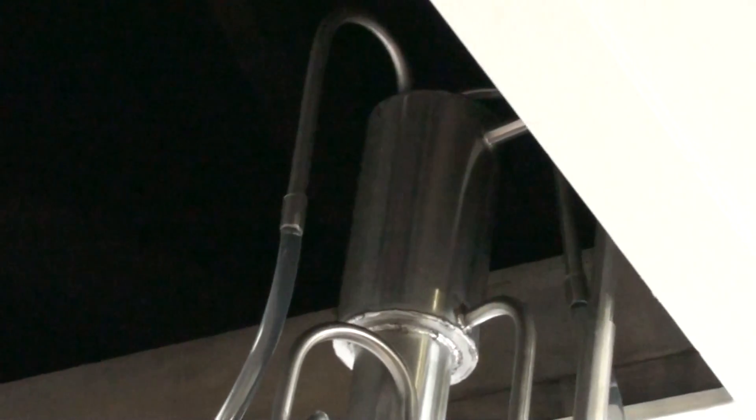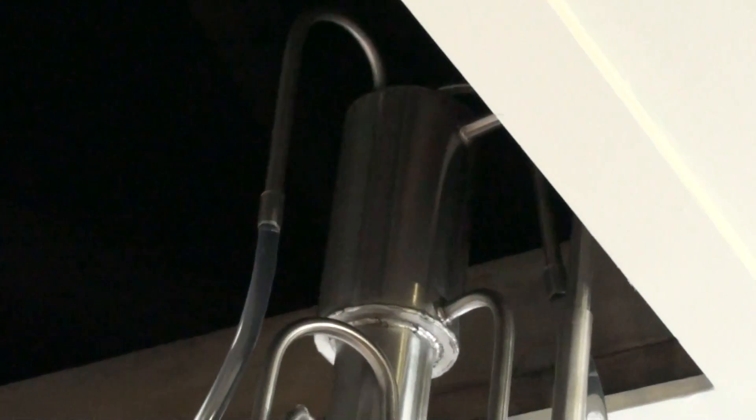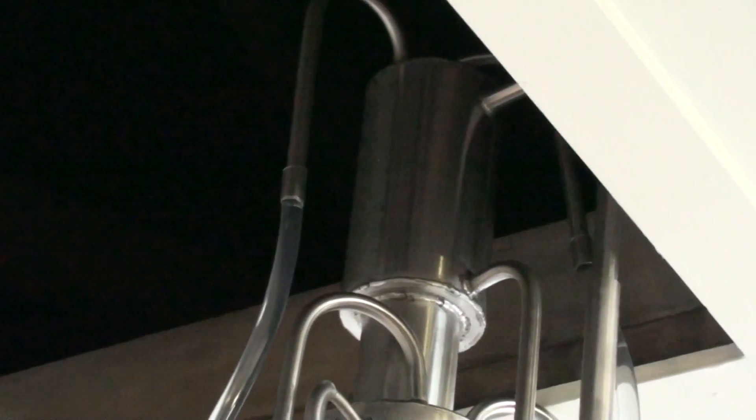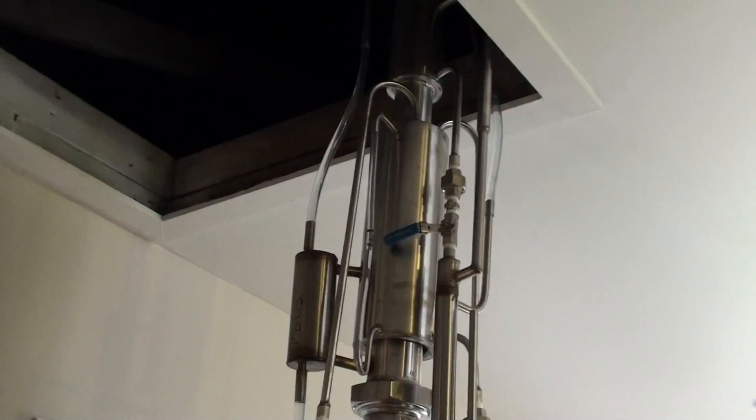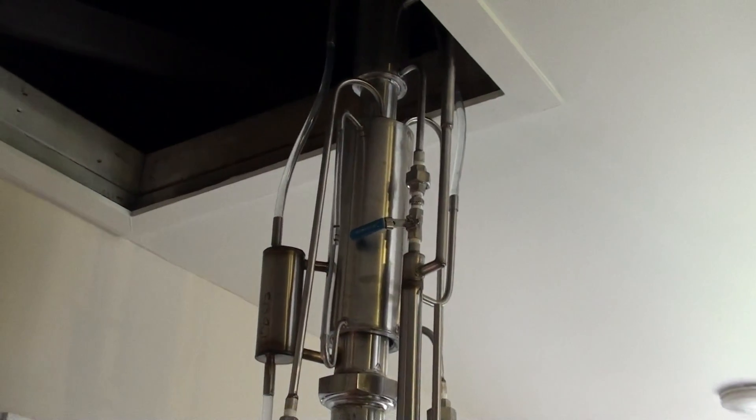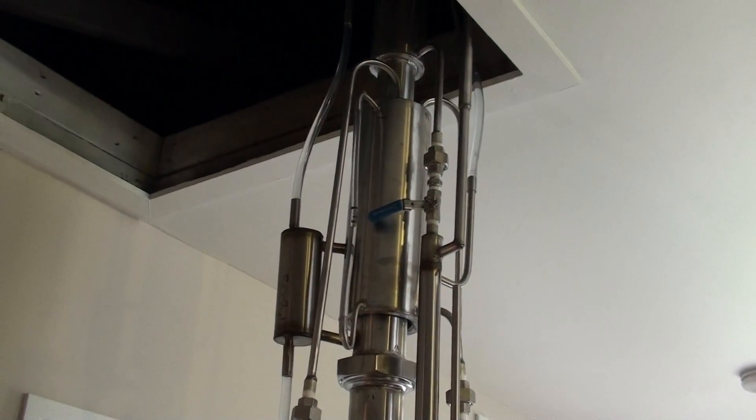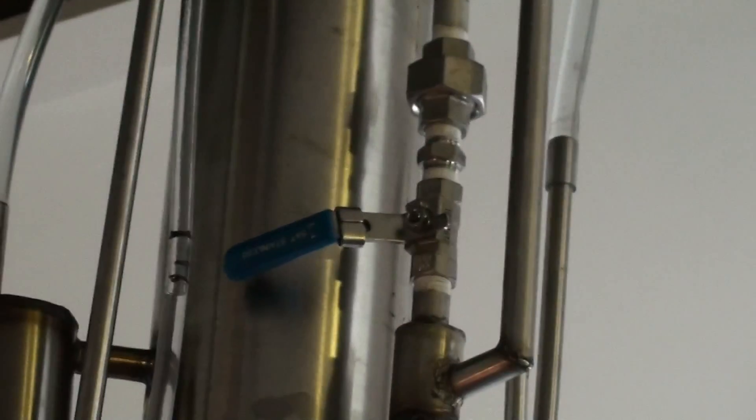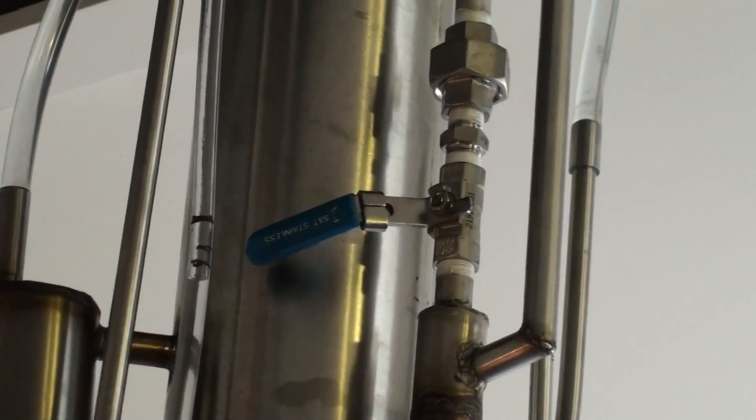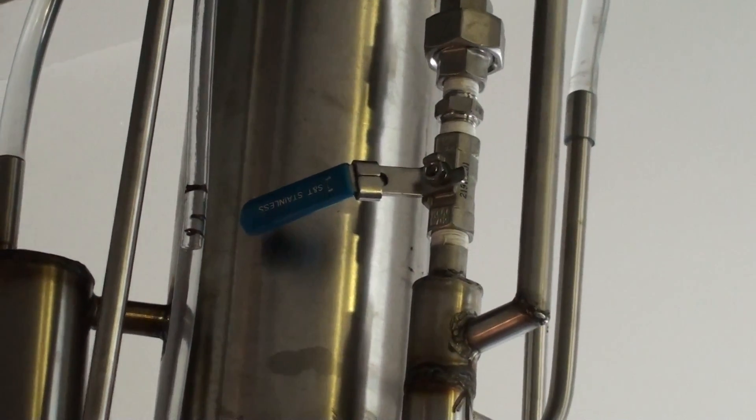The top portion is a head separator, so it separates all the heads. This portion is for the body, it separates the body. The body has a control valve and you can control the amount of heads to be cut from the spirits.